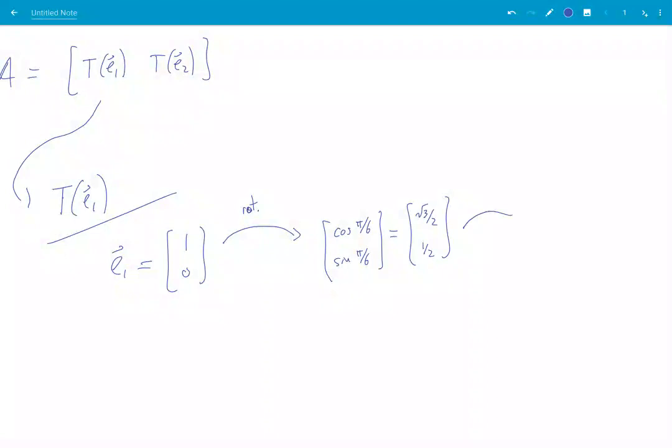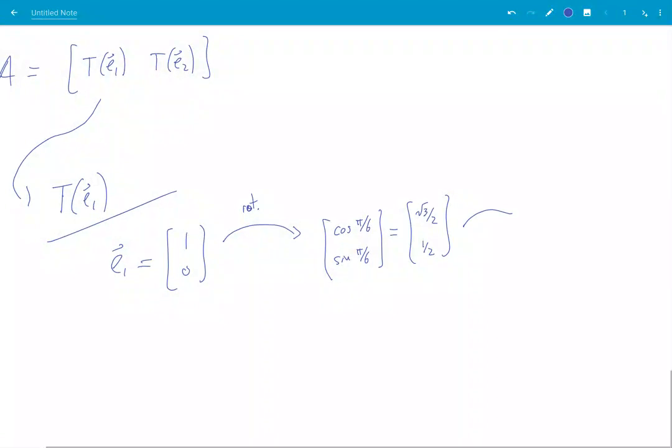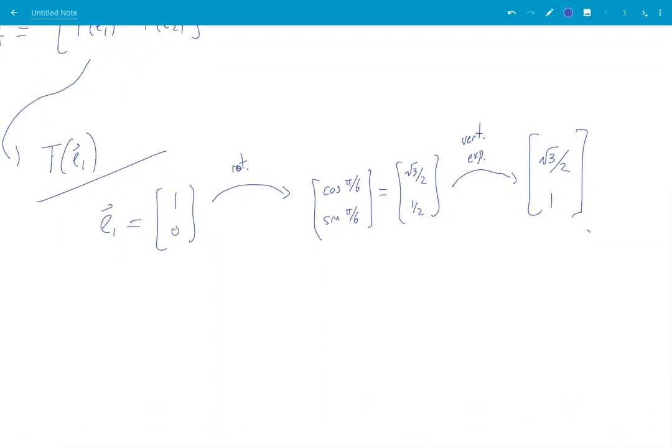And then we're going to vertically expand by a factor of 2. So, that means I'm multiplying this component by 2. And there we go. There's my T of E₁.